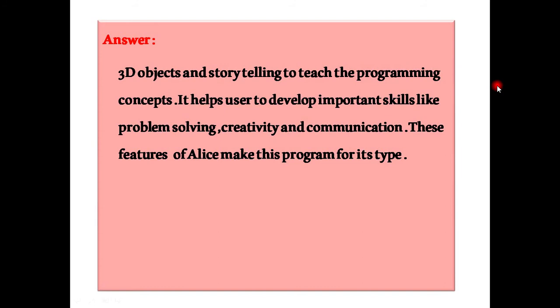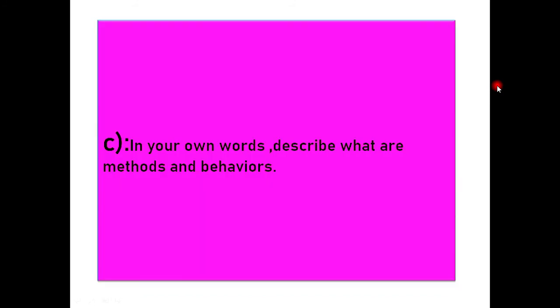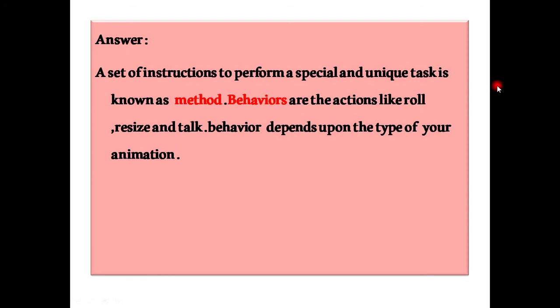C: In your own words, describe what are methods and behaviors. Don't think the spelling of behaviors is wrong because in computer terms the spelling of the behavior is the same as I have written in this slide. We miss the U in behavior and color. Answer: A set of instructions to perform a special and unique task is known as methods. Behaviors are actions like role, recites, and talk. Behavior depends upon the type of your animation.